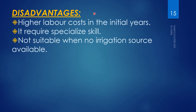The disadvantages of the SRI method include higher labor costs in the initial years. It requires specialized skill for nursery and main field preparation. It is also not suitable when no irrigation source is available, since seedlings are transplanted at a young age and require consistent irrigation.